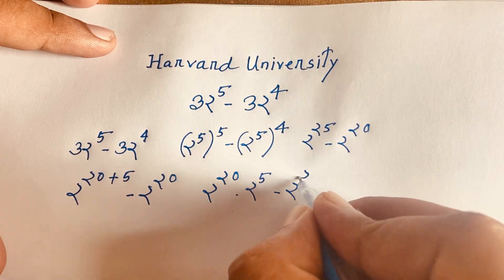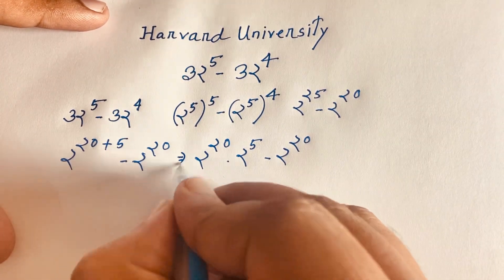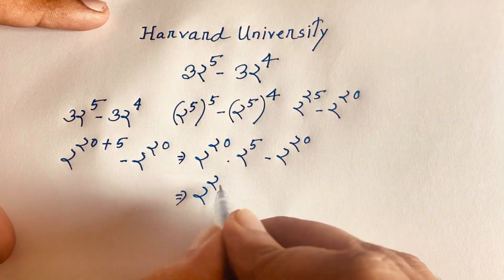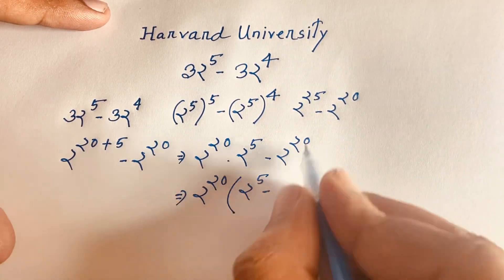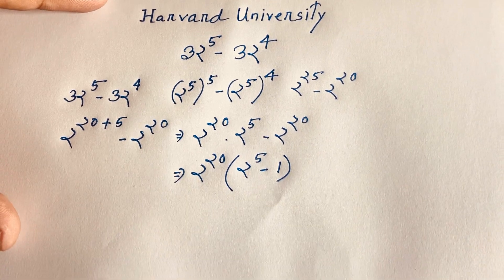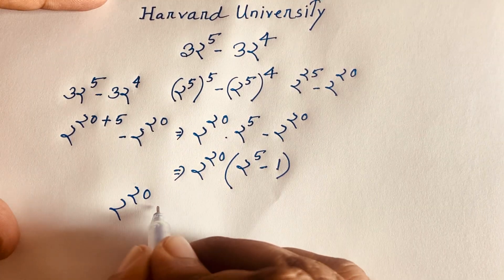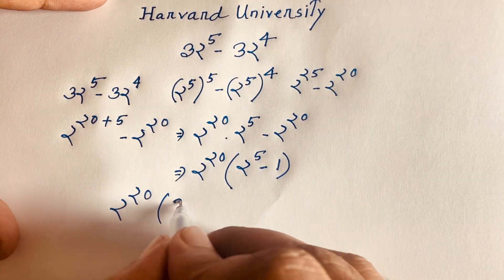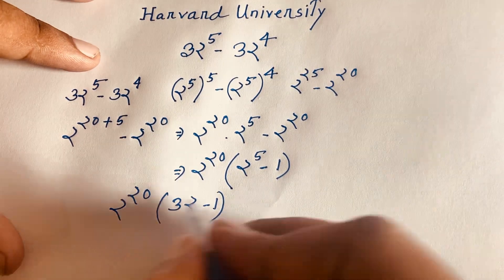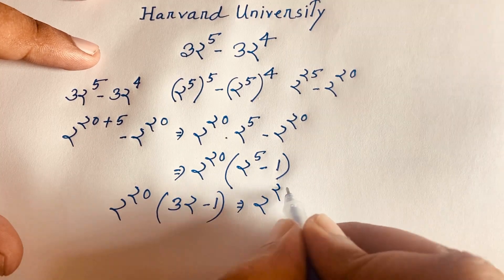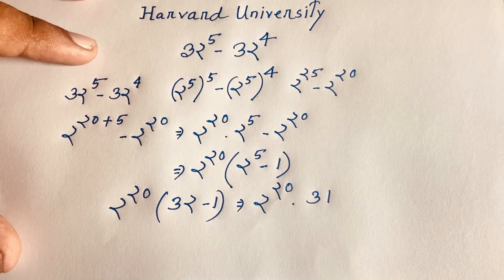You can see that 2²⁰ is common in both terms. Factoring it out: 2²⁰ times (2⁵ minus 1). Dividing each term by 2²⁰ gives 2⁵ minus 1, which equals 32 minus 1 = 31. So the expression becomes 2²⁰ times 31.